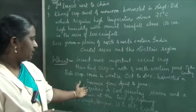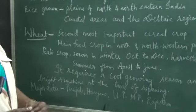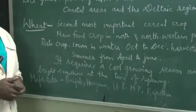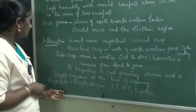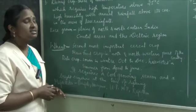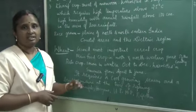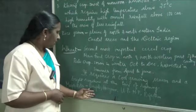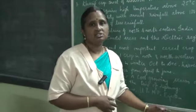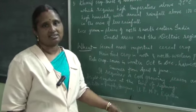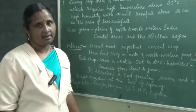Wheat requires a cool growing season and bright sunshine at the time of ripening, which occurs in summer. The major states where wheat production is more are Punjab, Haryana, Uttar Pradesh, Madhya Pradesh, and Rajasthan. Almost all these states are northern states of India.